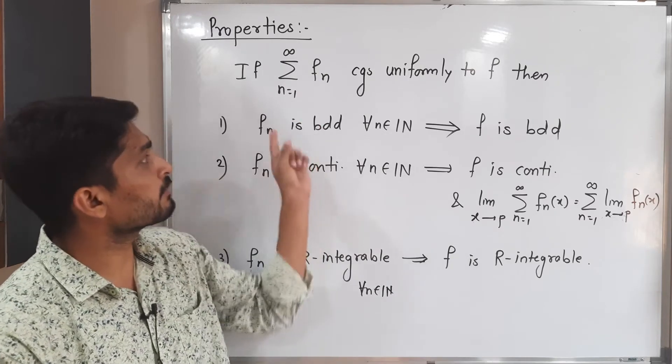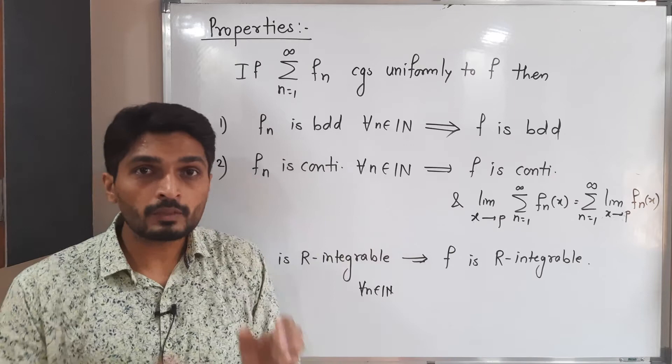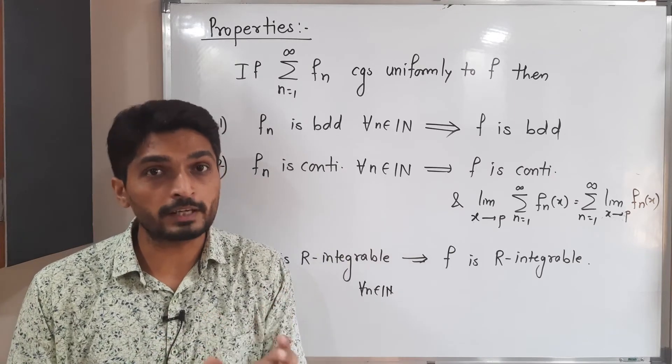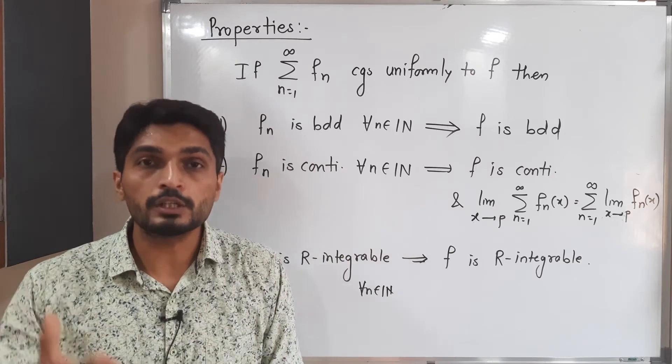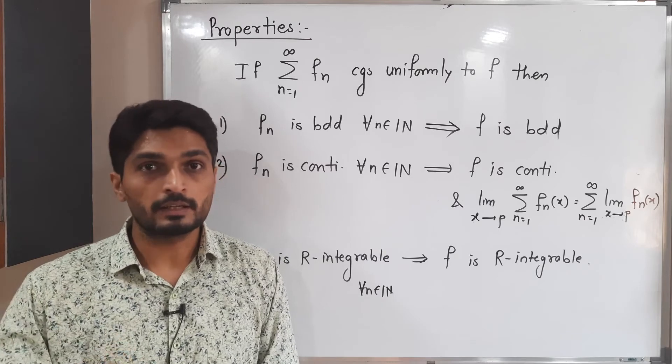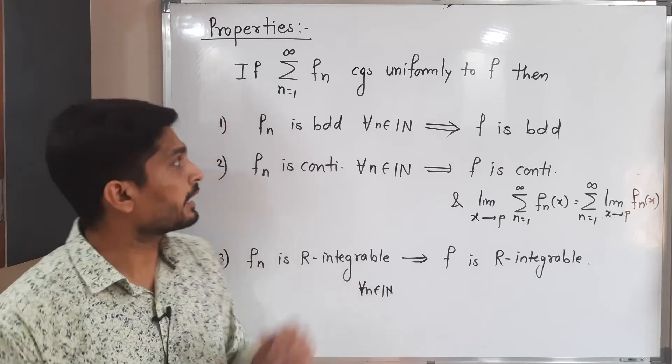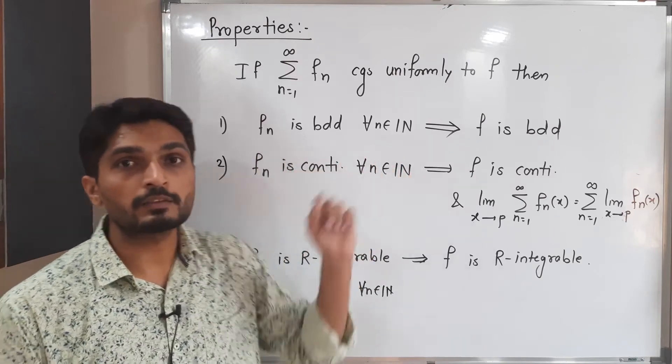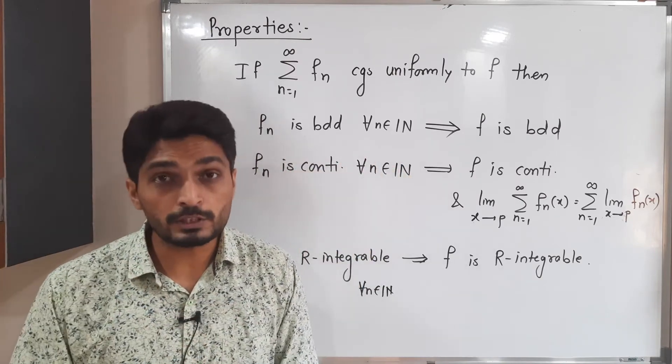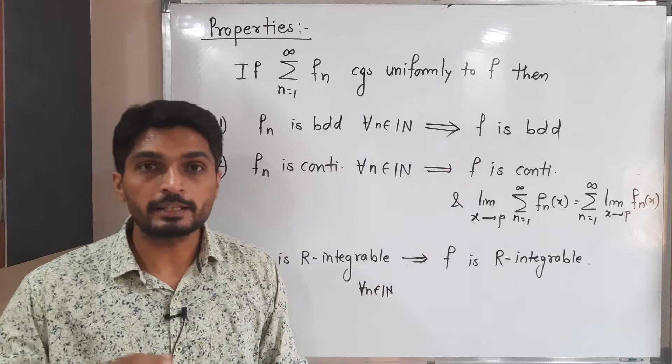If each fn is bounded, obviously it is bounded on the set where the functions are defined. So if each fn is defined on non-empty set S of R and if each fn is bounded, then where the series converges, that limit f is also bounded.